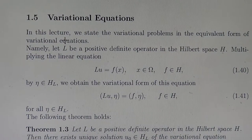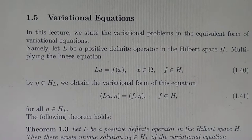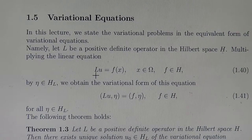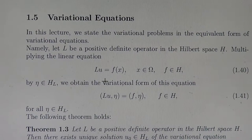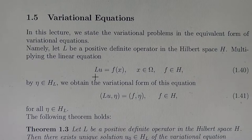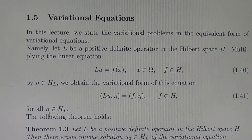Variational Equations. In this lecture, we state the variational problems in the equivalent form of the variational equations. Namely, let L be a positive definite operator in the Hilbert space H. Multiplying the linear abstract equation by eta in the new Hilbert space generated by the positive definite operator L, we obtain the following variational form of this equation. This variational equation holds for all eta in the new Hilbert space H_L.